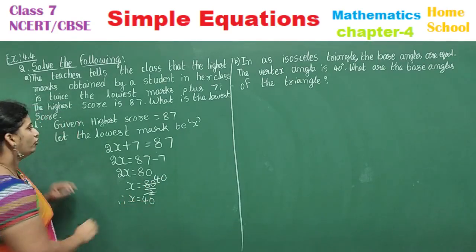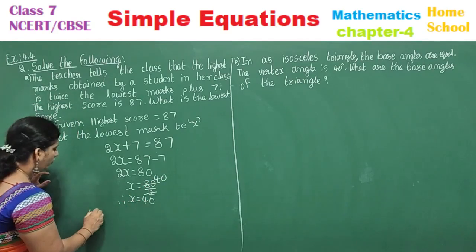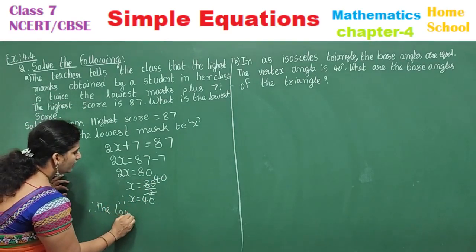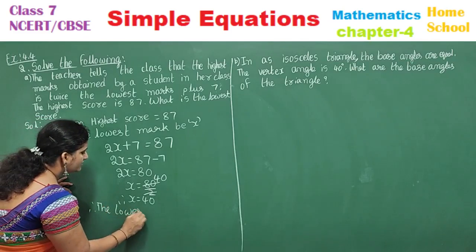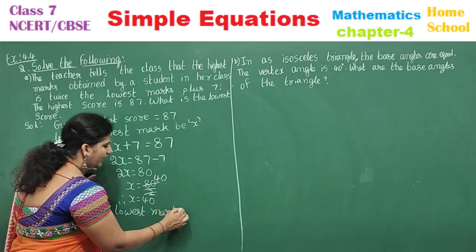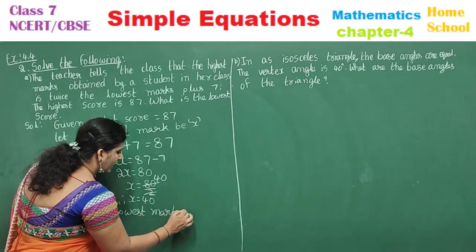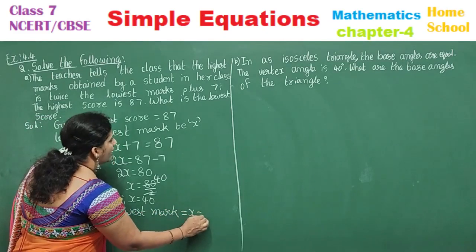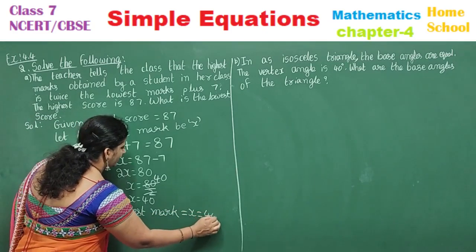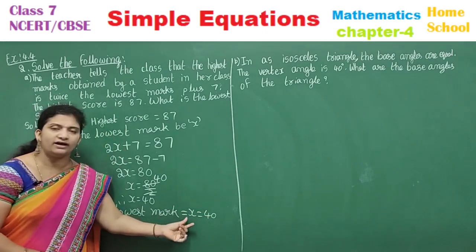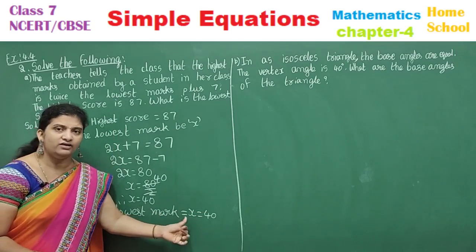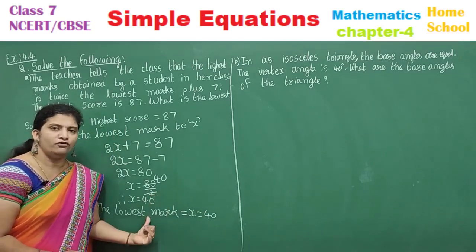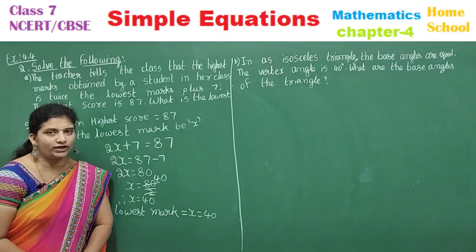Therefore the lowest mark obtained in her class is equal to x = 40. We assumed the lowest mark as x, so x = 40. Therefore the lowest mark is 40.